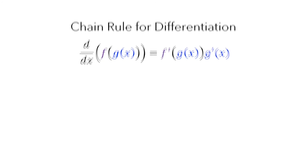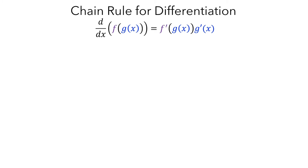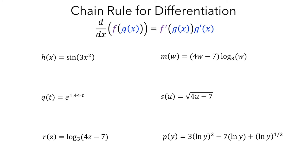Now let's look at some examples. Sometimes the hardest part is determining whether you can use the chain rule. Here are six examples. Pause the video and decide for which of these functions you would need the chain rule to compute its derivative. In order to determine whether we can use the chain rule for each example, we'll need to identify the outside function and the argument.